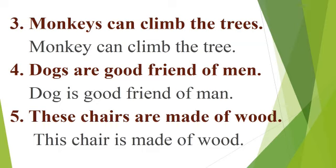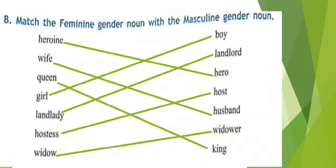Number five — These chairs are made of wood. Its singular form is: This chair is made of wood. Now match the feminine gender noun with the masculine gender noun. Feminine means female and masculine means male.